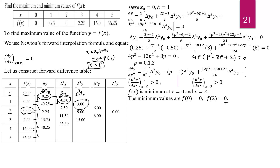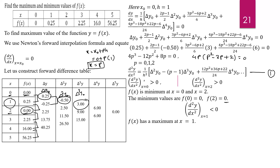When we calculate the second order derivative at x = 1, we get a negative value. Substituting x = 1 into the second derivative formula gives a negative result, meaning the function is maximum at x = 1. The maximum value of f(x) is 0.25 at x = 1. In this way, we calculate the maximum and minimum values of the function. Thank you.